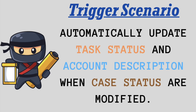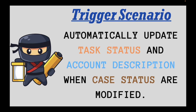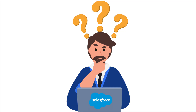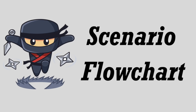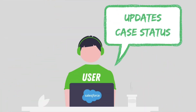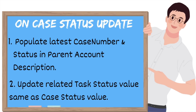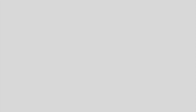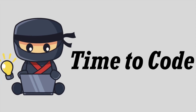In today's scenario we have to update Account Description and Task Status whenever the Case Status field gets updated. To explain this more clearly using a flowchart: when a user updates Case Status, we need to perform two actions. First, populate the Case Number and Status of the recently updated Case into the Description of the parent Account. Second, update the Status value of the related Task with the same value as Case Status.